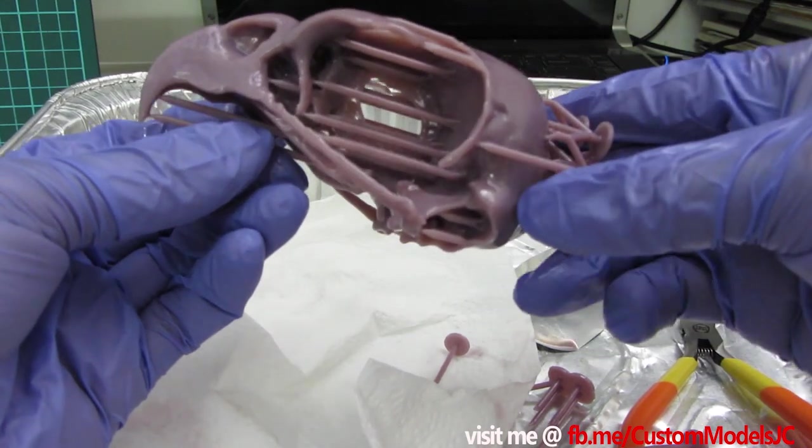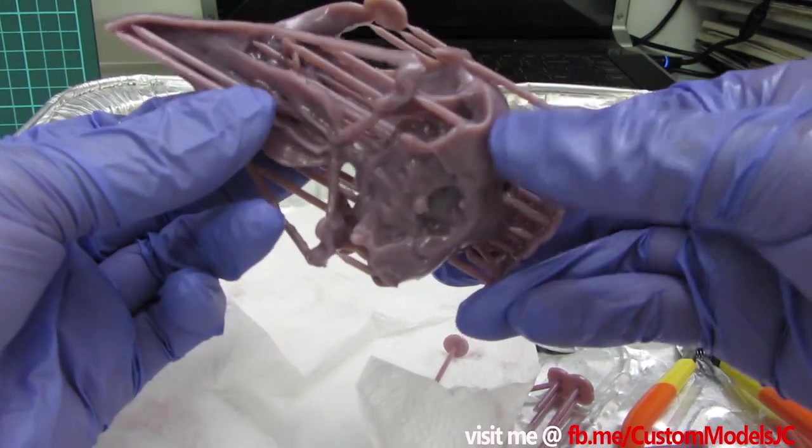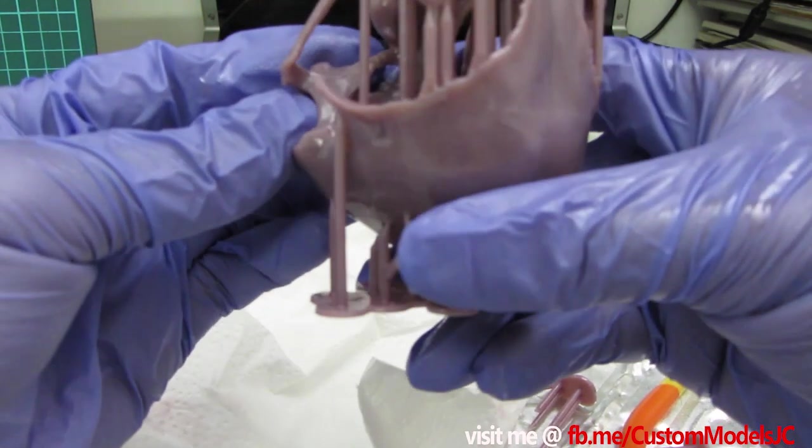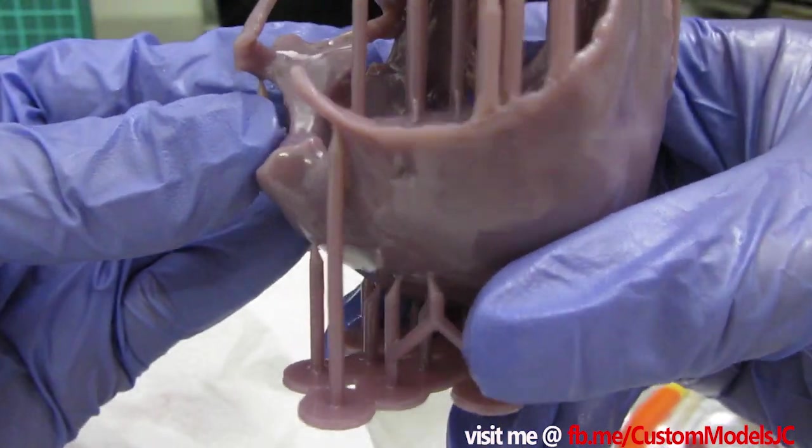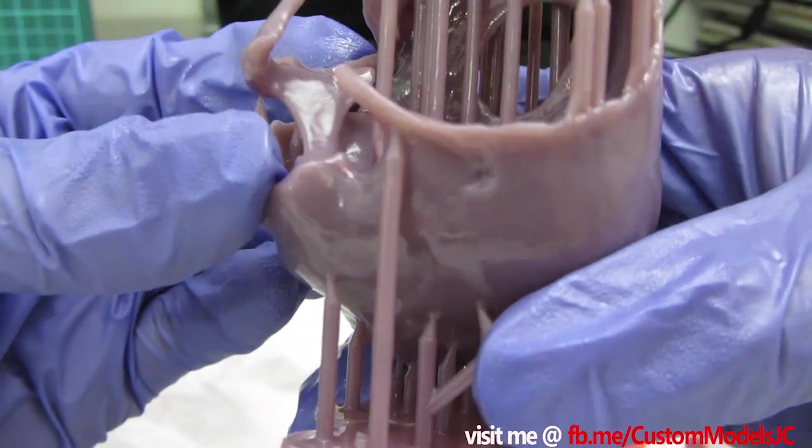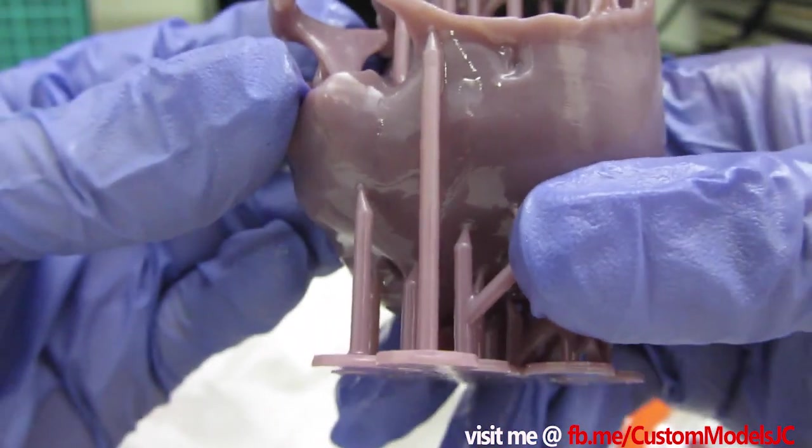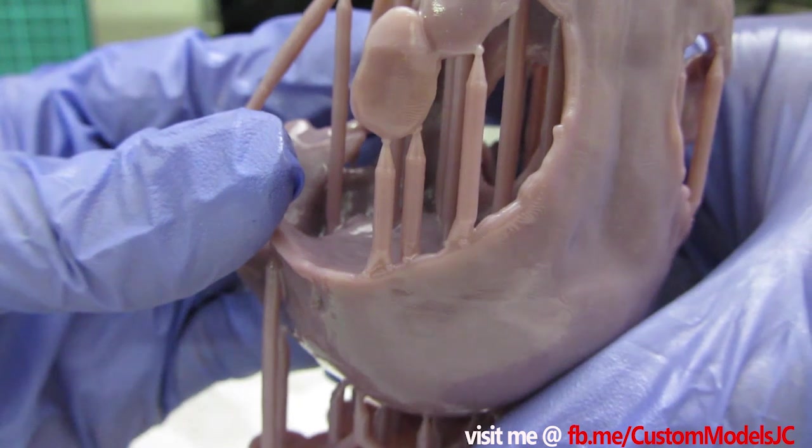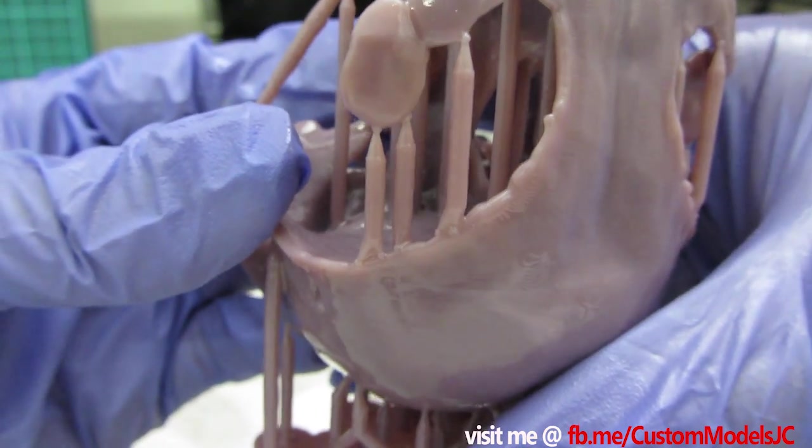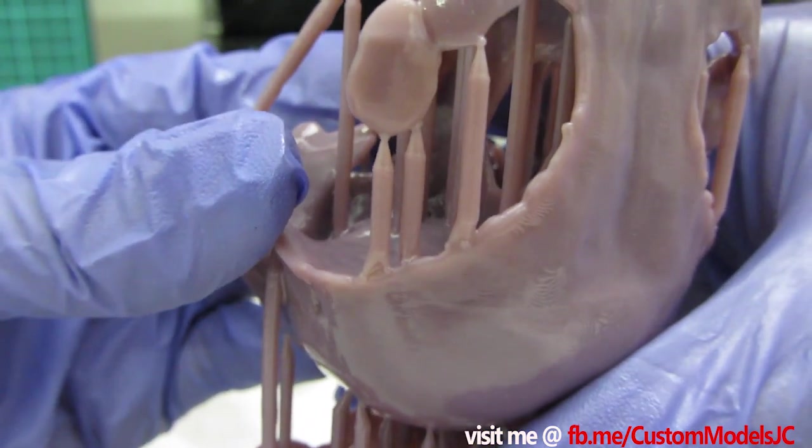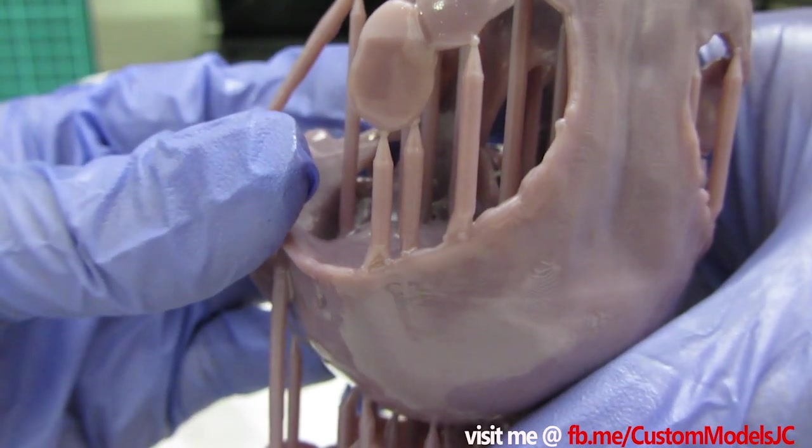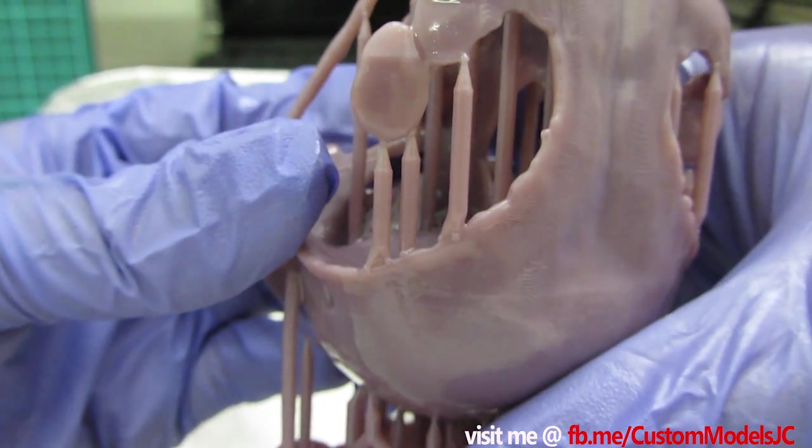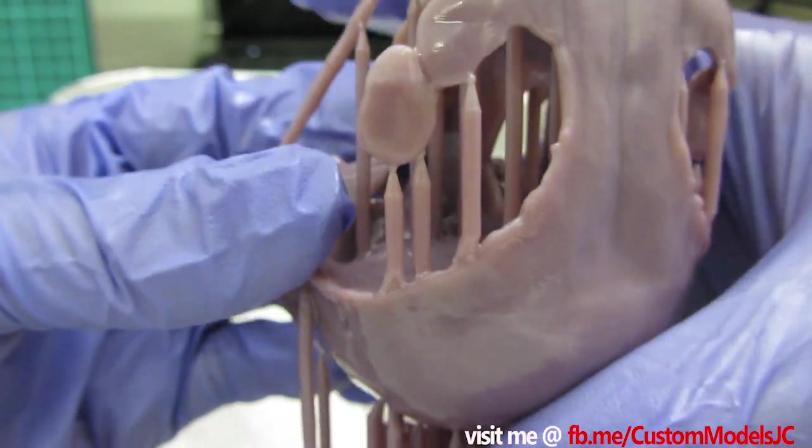So let's see if we can focus in here. I'm not sure how good you're gonna see this, but you can see the tapered sphere on the tip of the support. So this allows for really easy removal of the actual support without chipping or damaging the actual print.